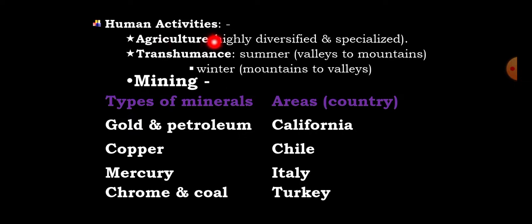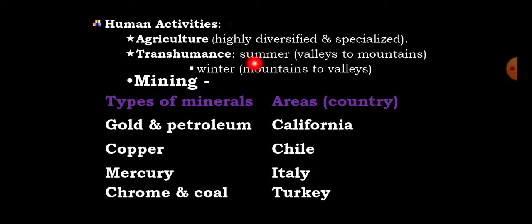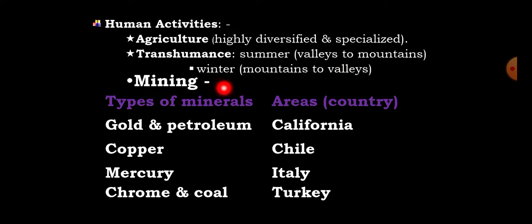Human activities include agriculture, which is highly diversified and specialized, including crop production and cattle rearing — specifically transhumance. Transhumance means the movement of herds and cattle in different seasons. People and their herds move from valley to mountain during summer and from mountain to valley during winter.